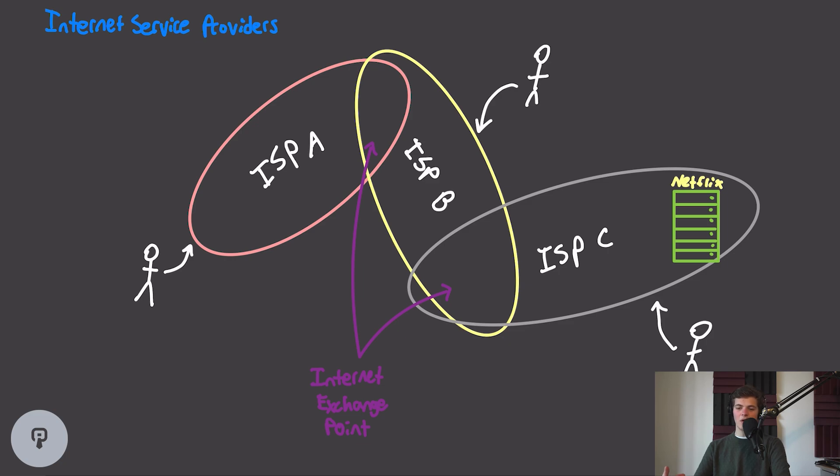They do this by peering with each other at what we call internet exchange points. We can think of the internet exchange points as the places where these ISPs overlap, and different internet service providers can agree to allow traffic to flow between them through these internet exchange points.